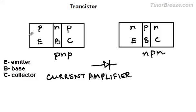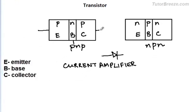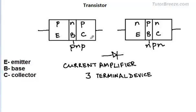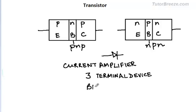Electrodes are connected to each of these layers, giving us three terminals in each case. So a transistor is called a three-terminal device. A junction transistor like this is called a bipolar transistor because we have two kinds of charge carriers — electrons and holes. 'Bi' means two, and 'polar' refers to the polarity of the charge carriers.